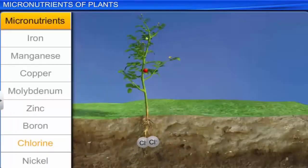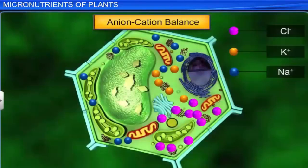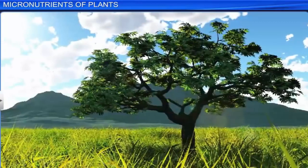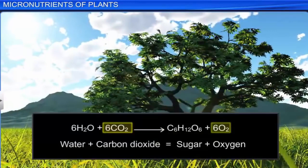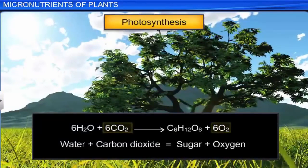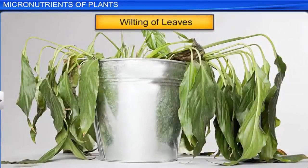Chlorine is absorbed in the form of chloride anion, Cl-. With Na+ and K+, chlorine helps in determining the solute concentration and the anion-cation balance in the cells. It is essential for water splitting and oxygen evolution in photosynthesis. The deficiency of chlorine leads to wilting of leaves.